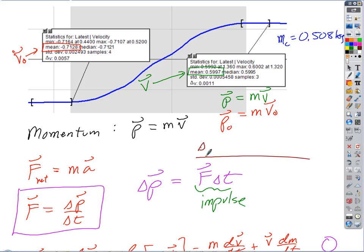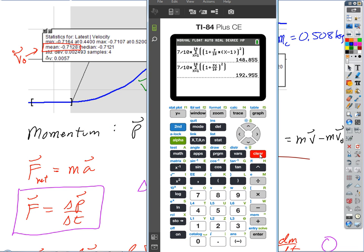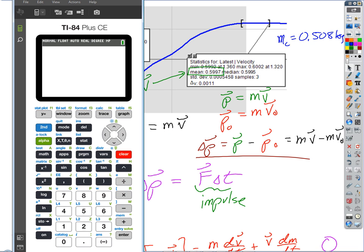So final momentum is just going to be MV. So what's the change in momentum going to be then? The change in momentum, just final minus initial, is just going to be P minus P-naught, and we can calculate that pretty easily. So that's just equal to MV minus MV-naught. I could even factor the M out if I want to, but we don't even have to. Let's just put this in a calculator and see what we get.